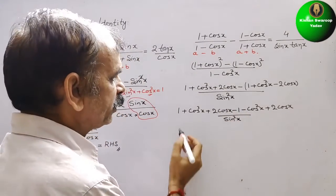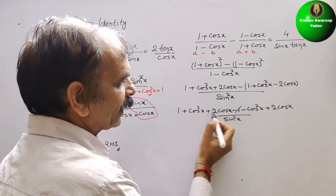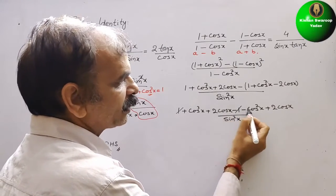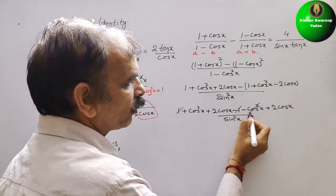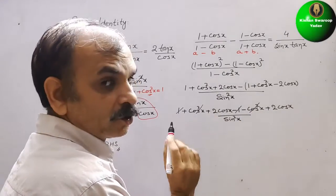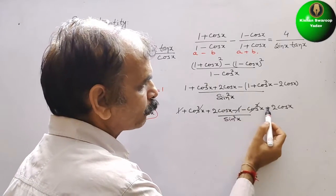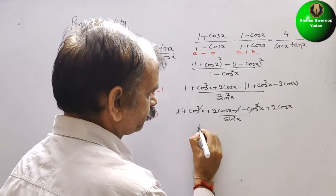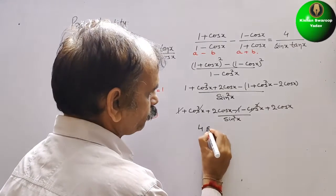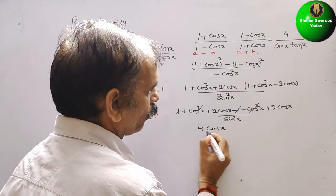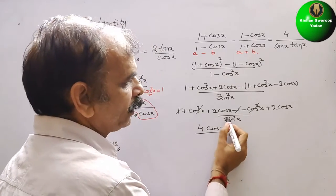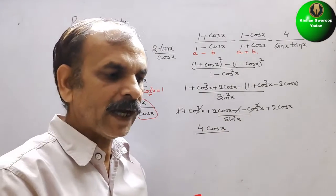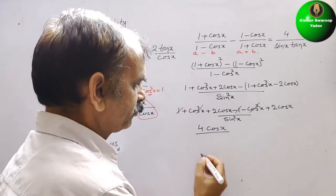Now we can see: 1 and -1 get cancelled. cos²x and -cos²x get cancelled. So we get 2 cos x + 2 cos x = 4 cos x, divided by sin²x, which is sin x × sin x.